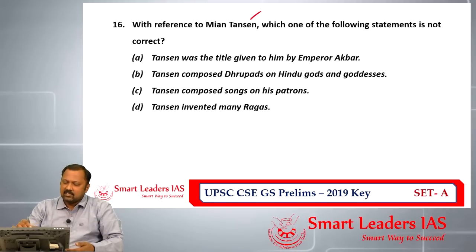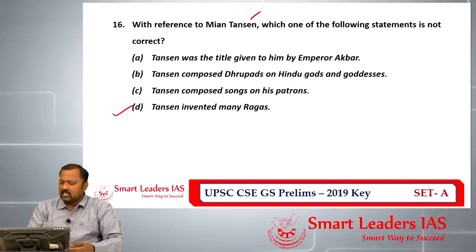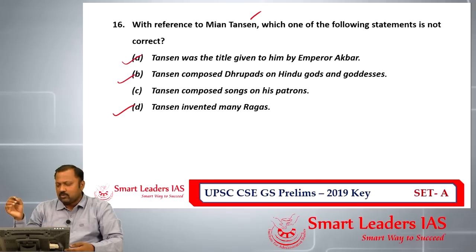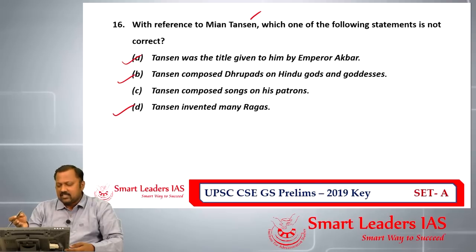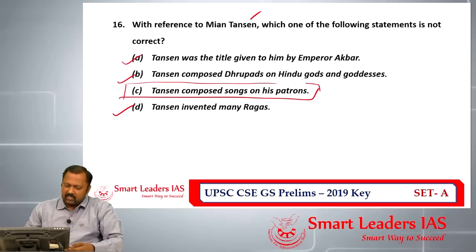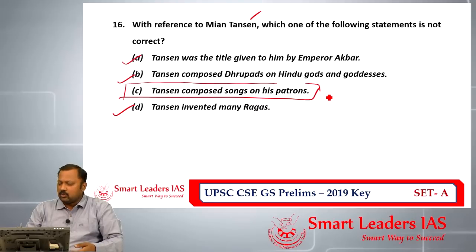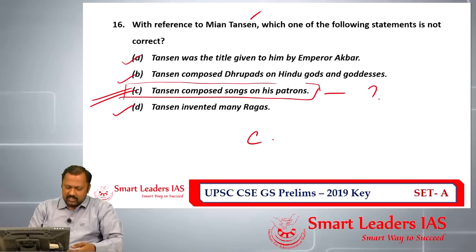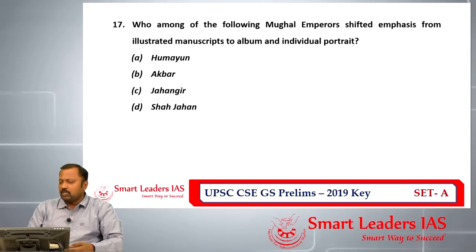Question number sixteen is about Tansen, asking which statement is not correct. Tansen invented many ragas — correct. He composed dhrupads on Hindu gods and goddesses — correct. He was given a title by Akbar — stated as correct, though not commonly found in standard books. The statement that Tansen composed songs in praise of his patrons or rulers is highly doubtable. So the answer for question number sixteen is C.